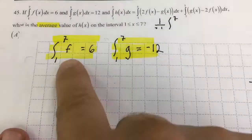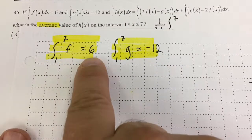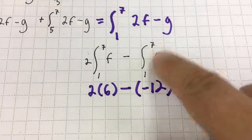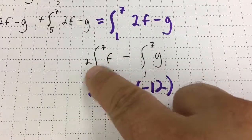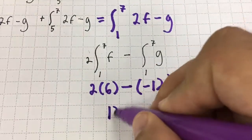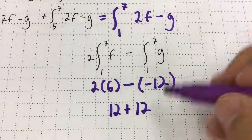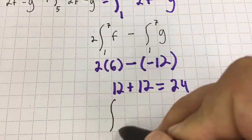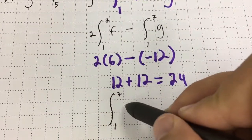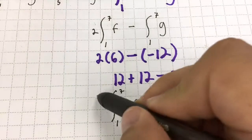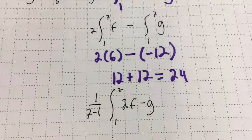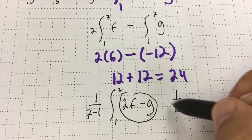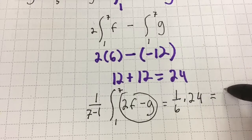From 1 to 7 of f equals 6 and from 1 to 7 of g equals negative 12. So this is 2 times 6 minus negative 12, which gives 12 plus 12 equals 24. However, I was supposed to find the average value from 1 to 7 of (2f minus g). Average value is 1 over 6 out front, so it's 1/6 times 24, which gives a value of 4.